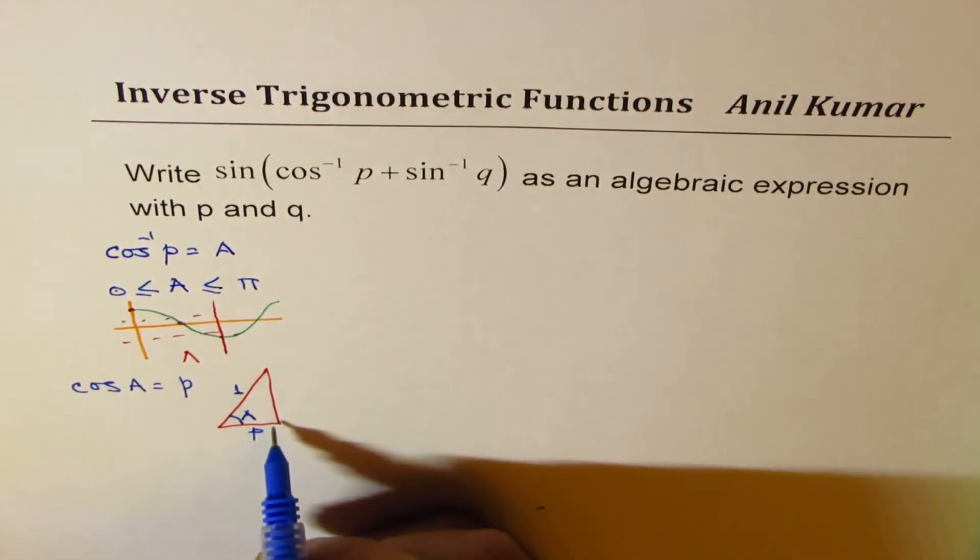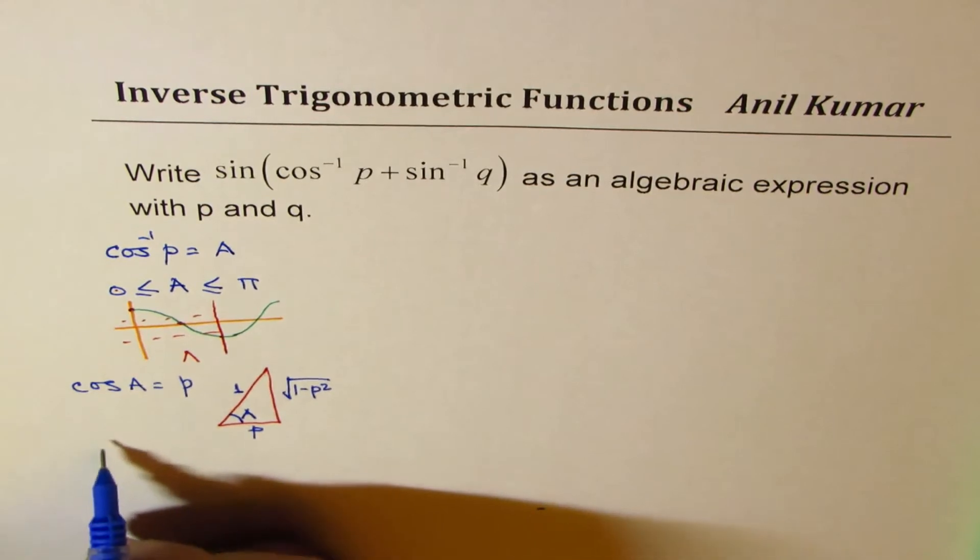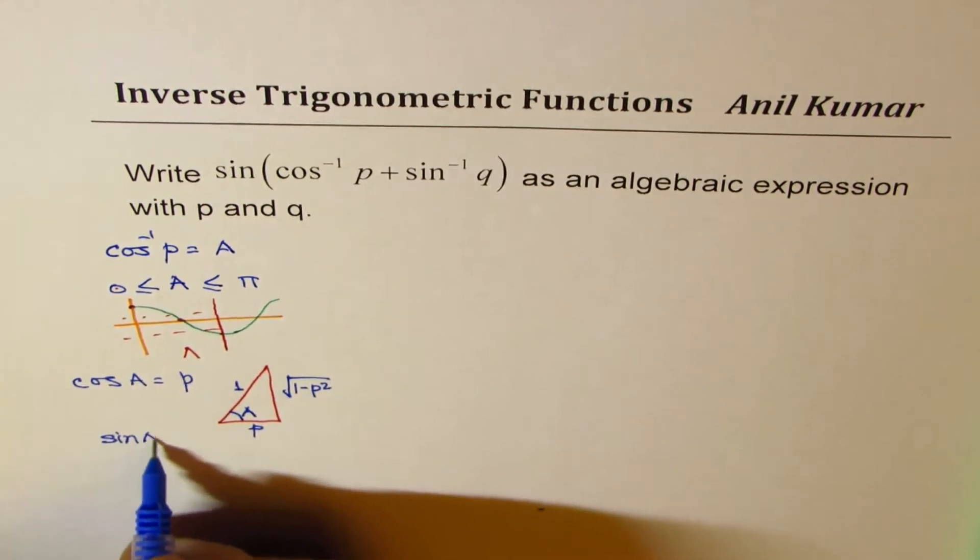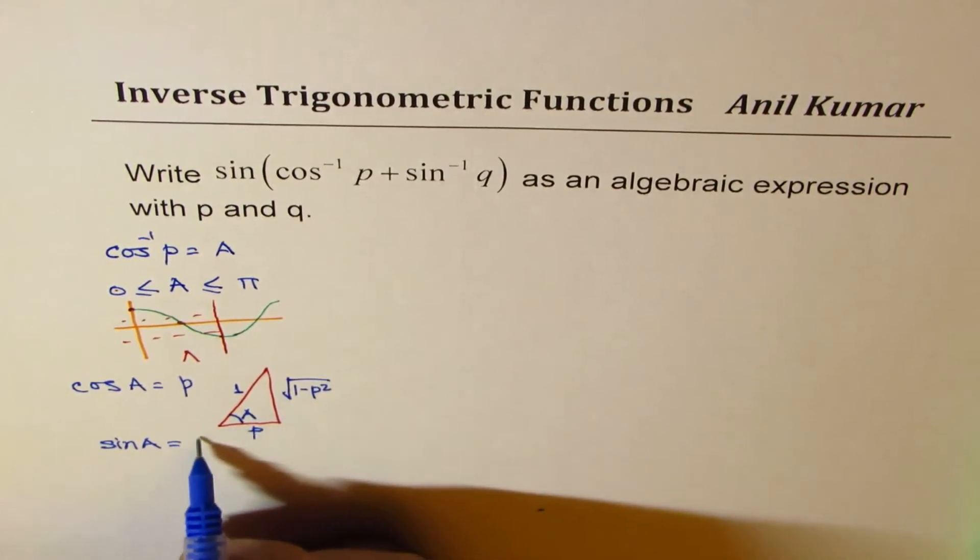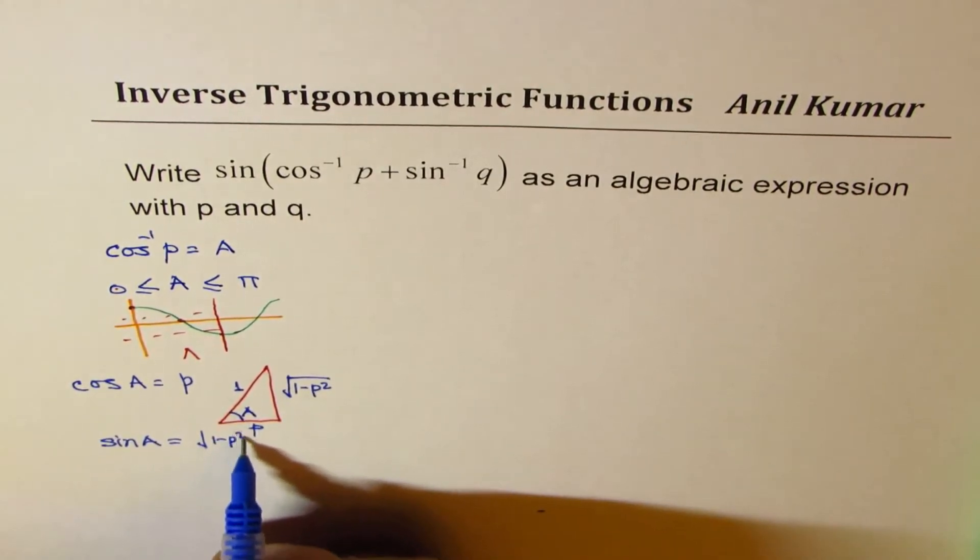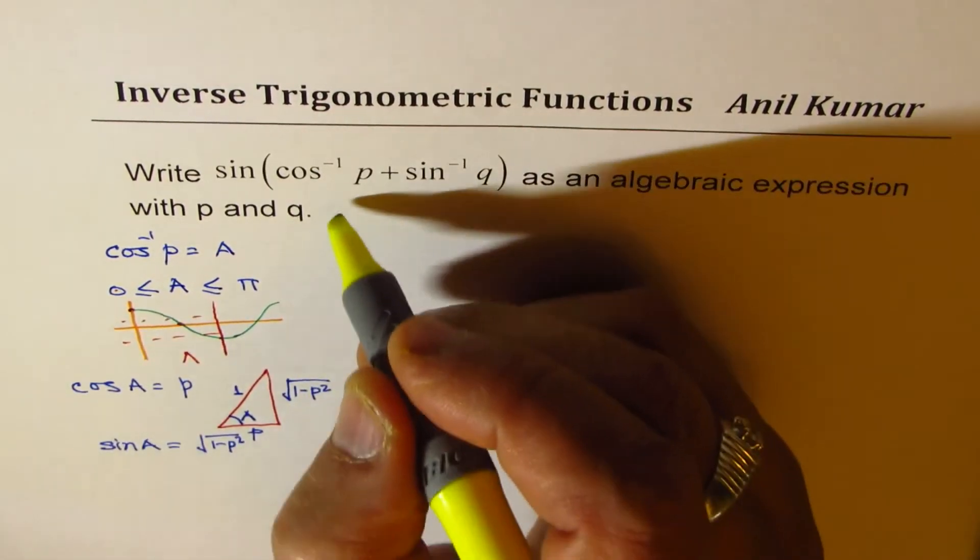So what should be the opposite side? It should be √(1 - p²), correct? And that gives you the value of sin A. So sin A will be equal to √(1 - p²). So we get the value of sin A and cos A.